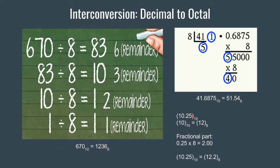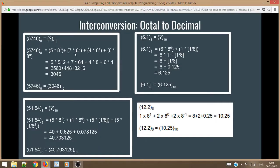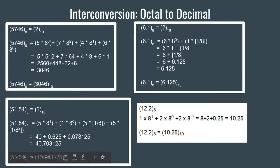Now let us see how to convert octal into decimal. When we converted binary numbers into decimal, we raised 2 to the power of the positional weights. Here everything remains the same, except the 2 used in binary is replaced by 8, the base of octal numbers.